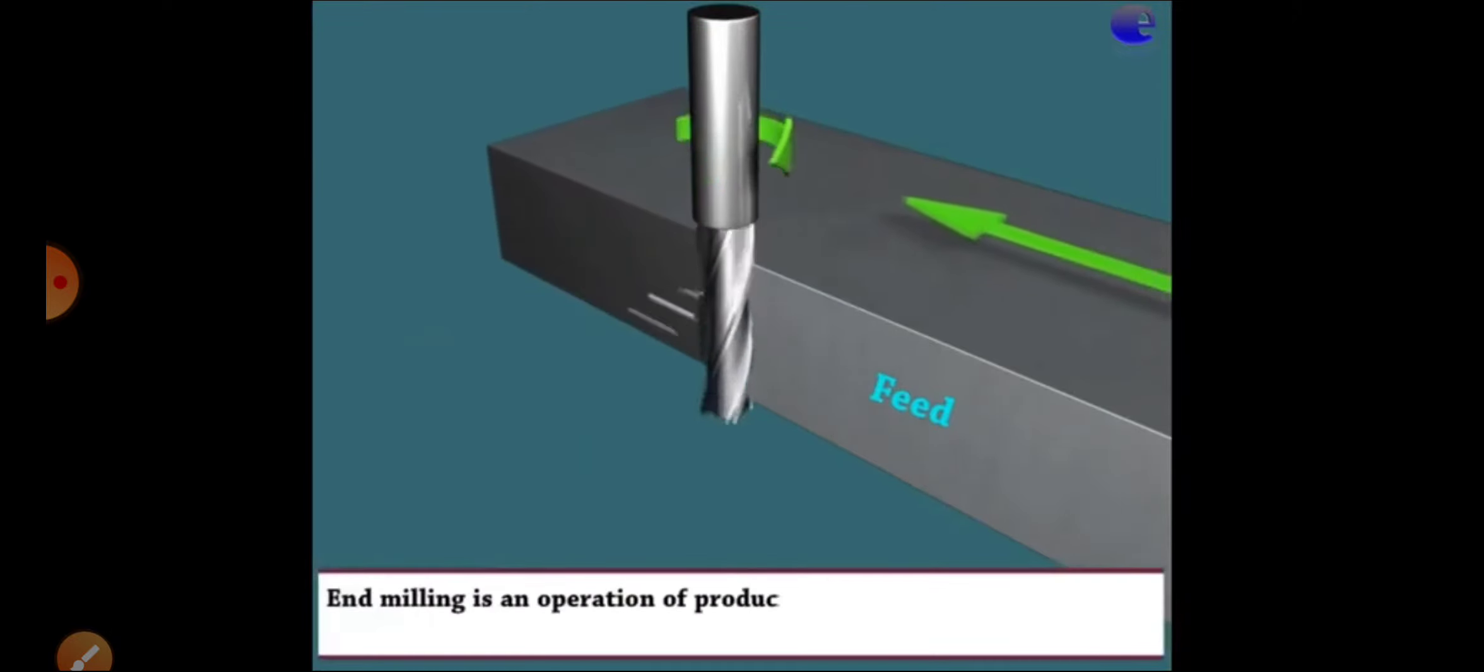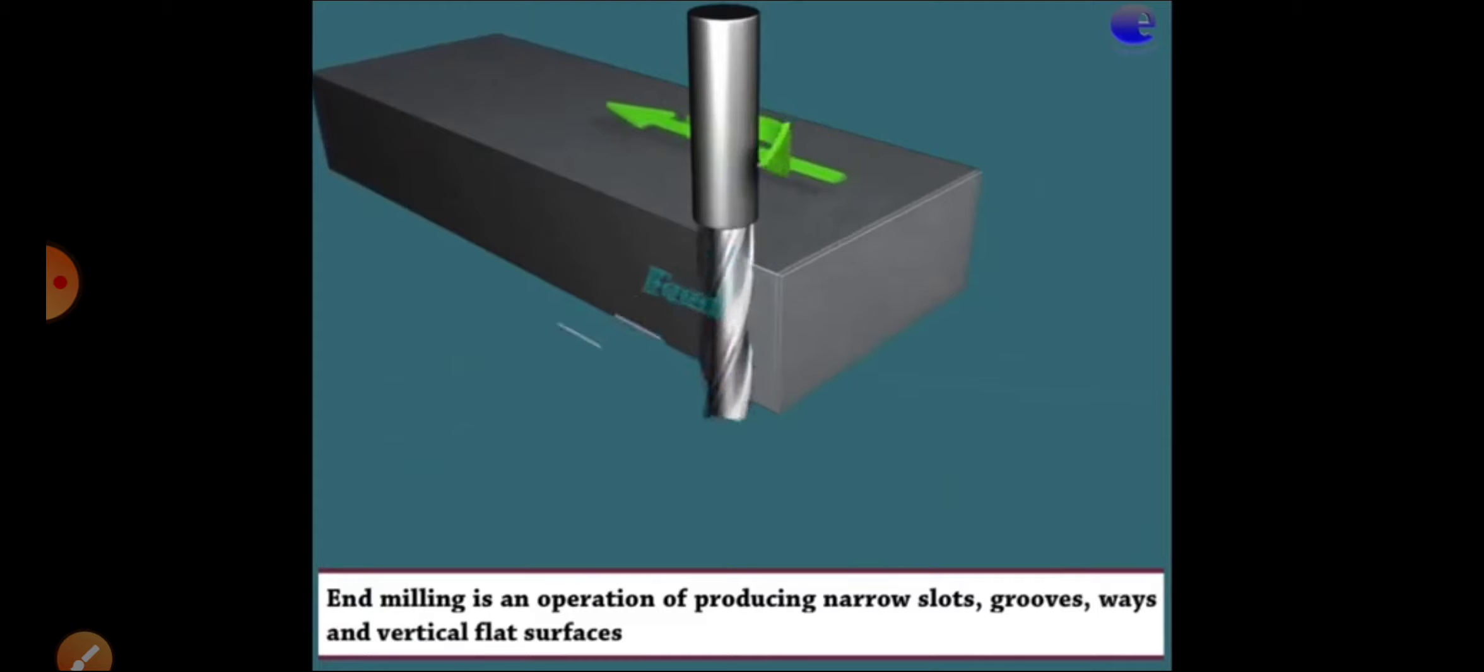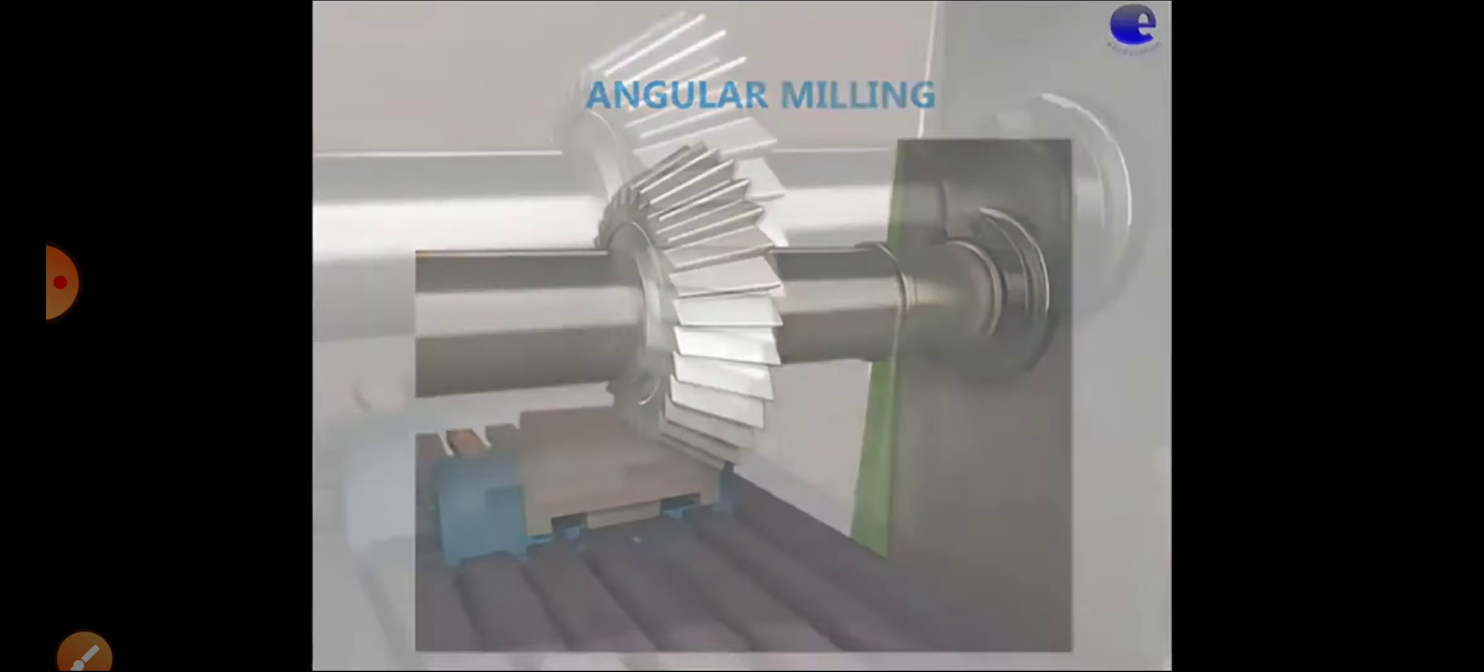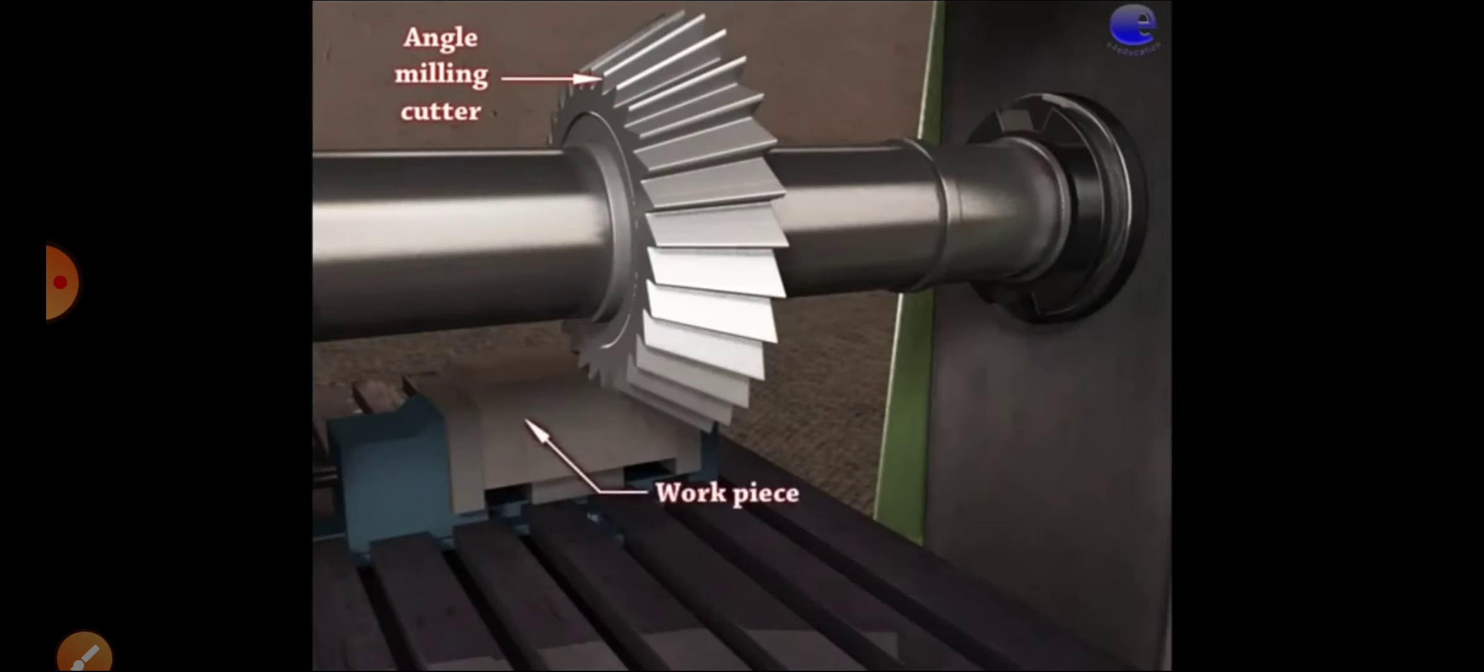Next is end milling, done with the help of an end mill. This is a single sided conical angular cutter. The work piece is held in place.